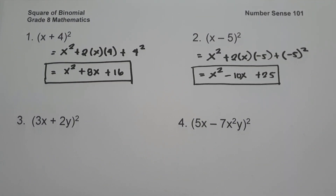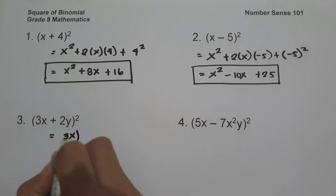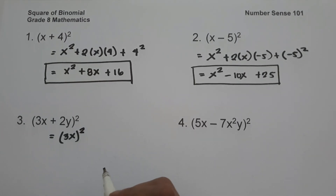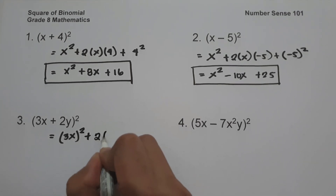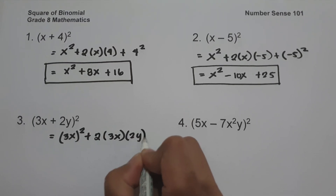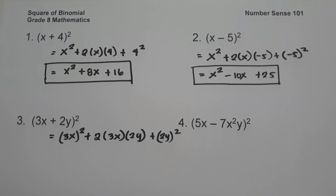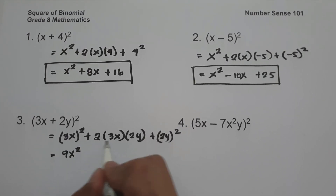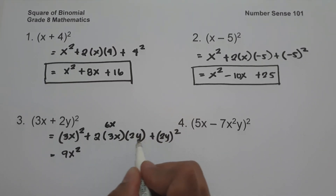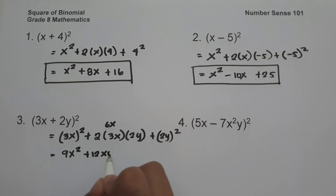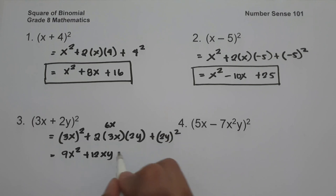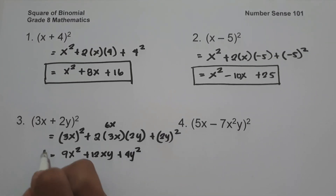On number three, we have the quantity (3x + 2y) squared. Let us square the first term, 3x, giving us (3x)². Then multiply 3x by 2y times the constant 2: 2 times 3x times 2y, plus the square of the last term, (2y)². Simplifying: 9x² + 12xy + 4y², and this will be our answer.